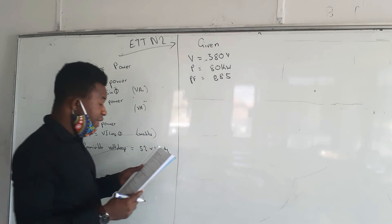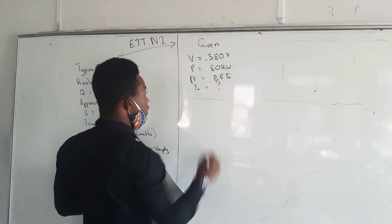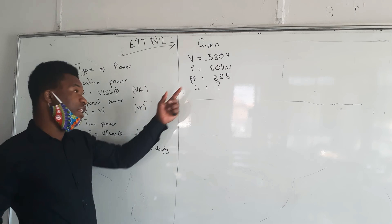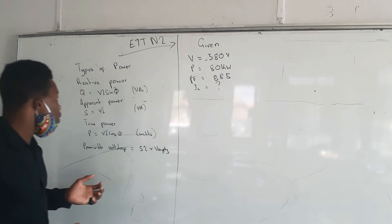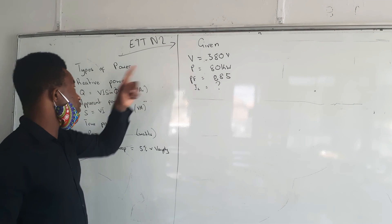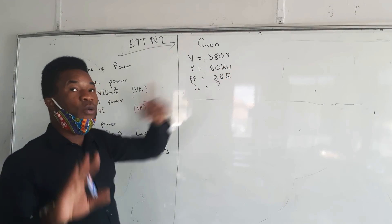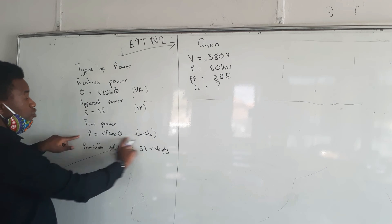The question wants us to calculate the line current, which is unknown. I prefer you to write the given information, then check what you're looking for. We're given voltage, we're given power, they want us to calculate current. Which formula are we going to use? Definitely the formula of the true power, which is P equals V I cos theta.